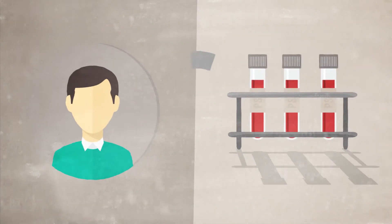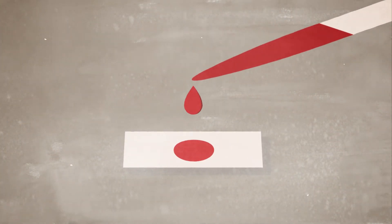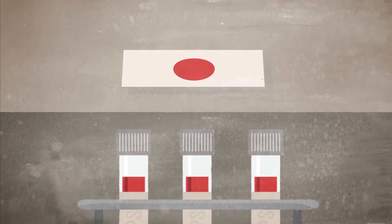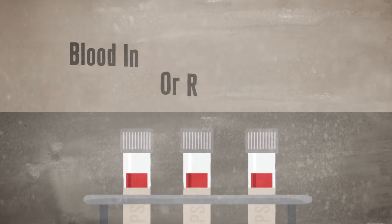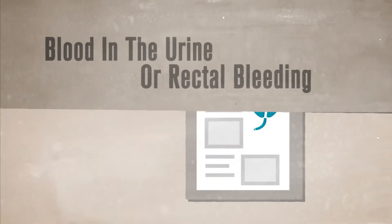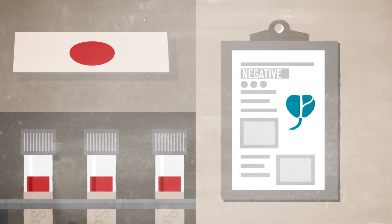So John might get screened for prostate cancer, receive a positive result, and likely undergo additional testing with a biopsy. John may experience complications from that biopsy, such as blood in his urine or rectal bleeding, only to find out that he doesn't have prostate cancer.